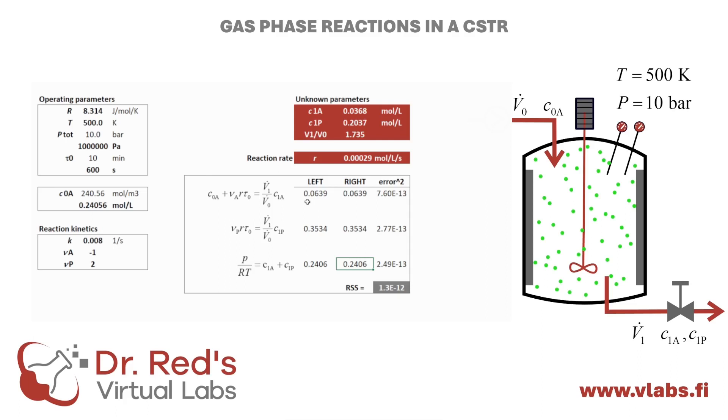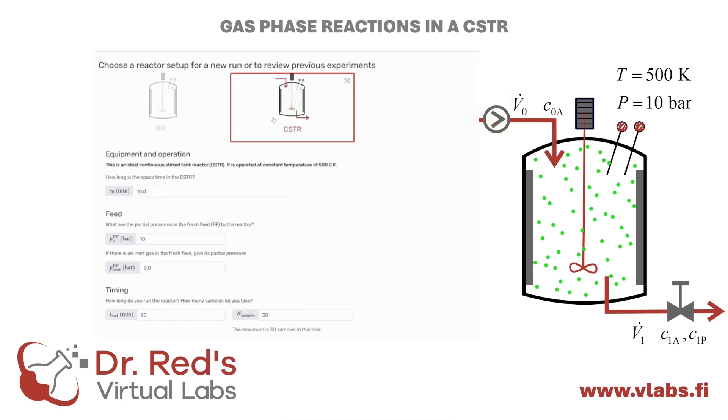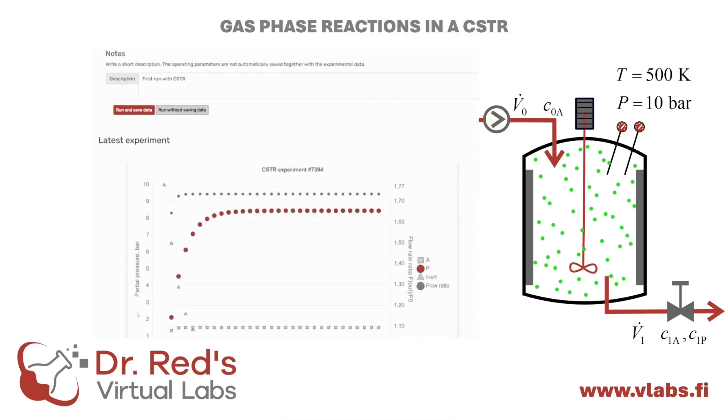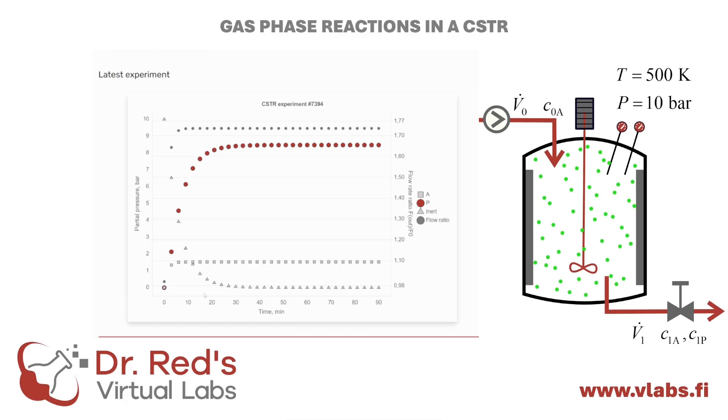Let's validate this in Dr. Redd's virtual lab. The CSTR starts off filled with an inert gas at a pressure of 10 bar. This inert gas is then displaced by the reactant. Steady state is reached in the reactor after approximately 40 to 50 minutes. The flow rate ratio, indicated by small gray circles, aligns well with our calculated result.